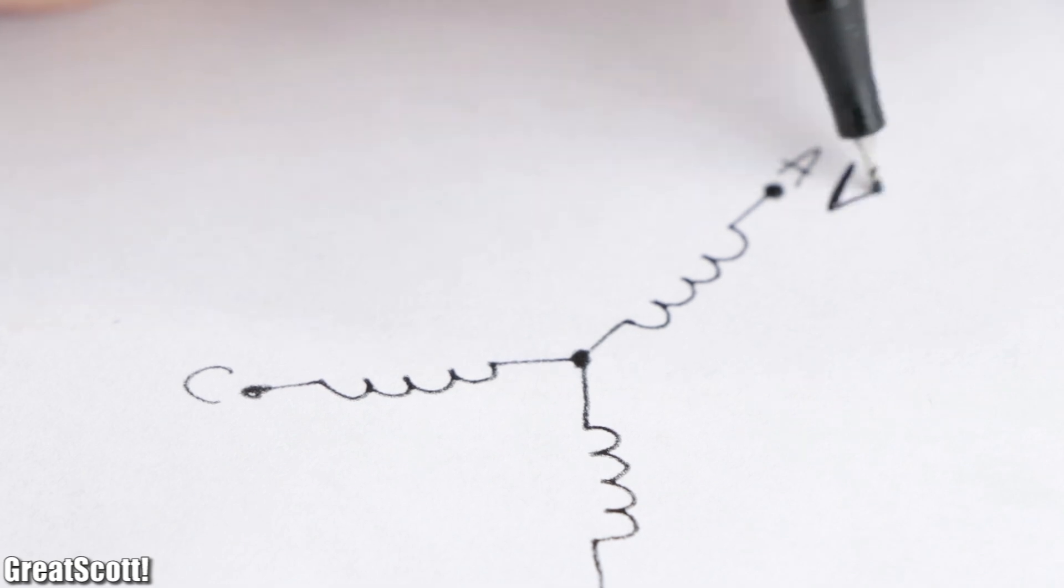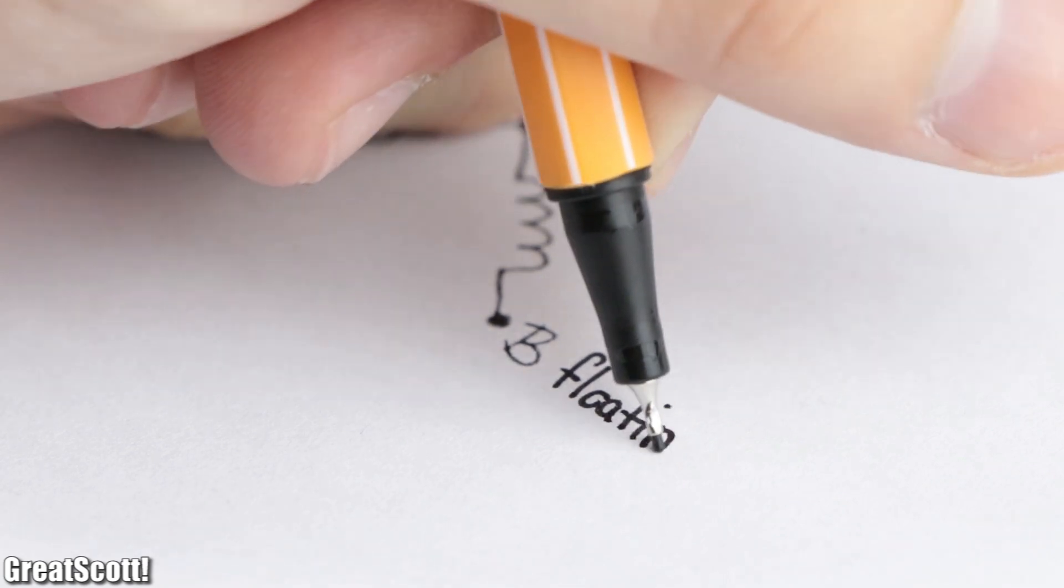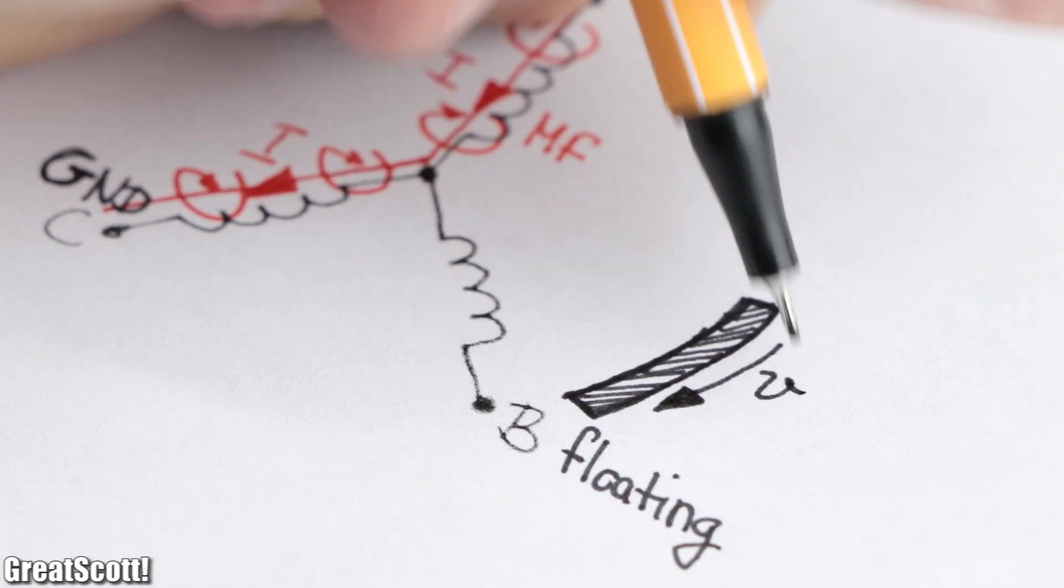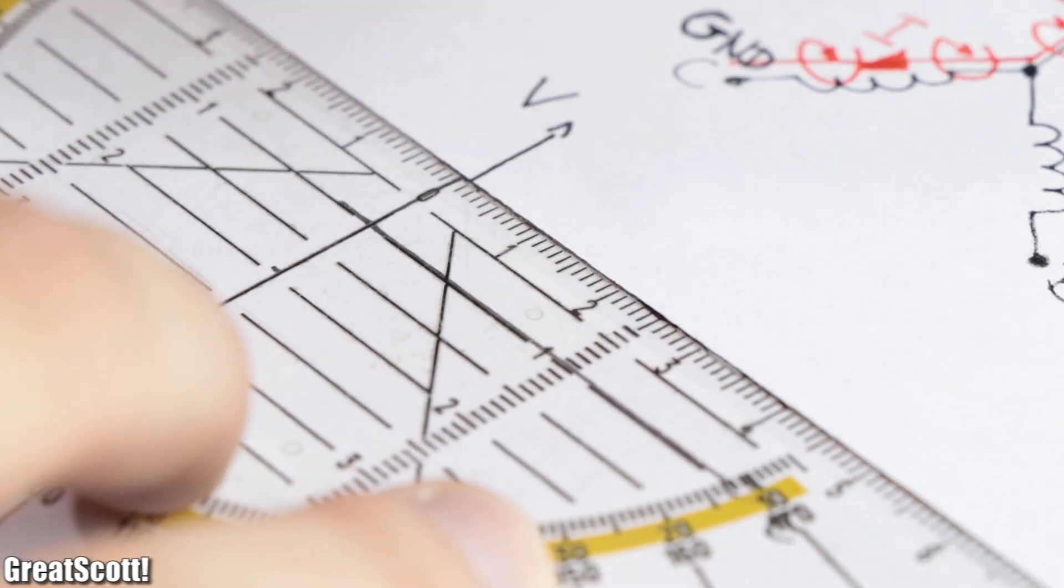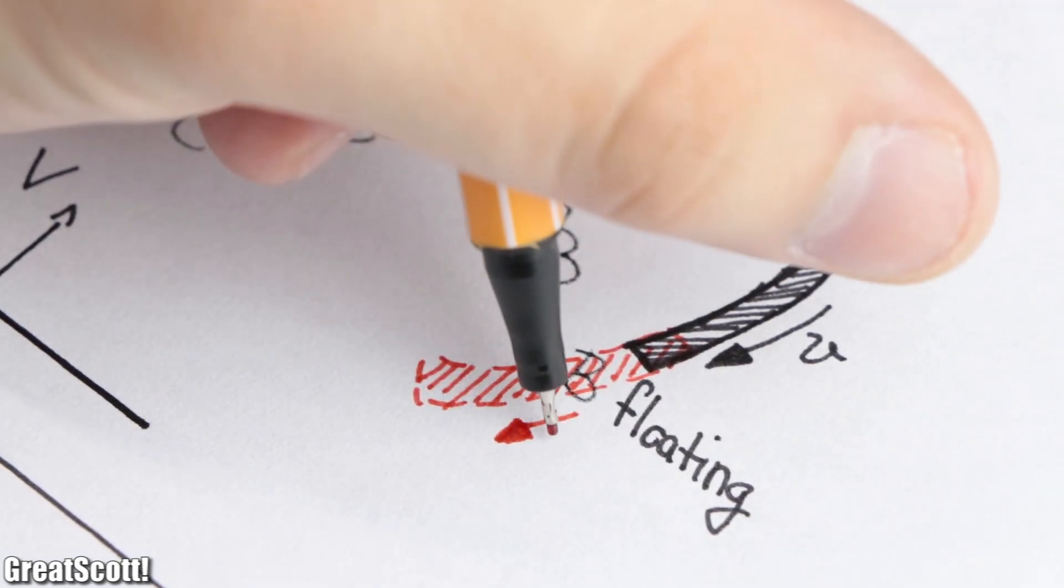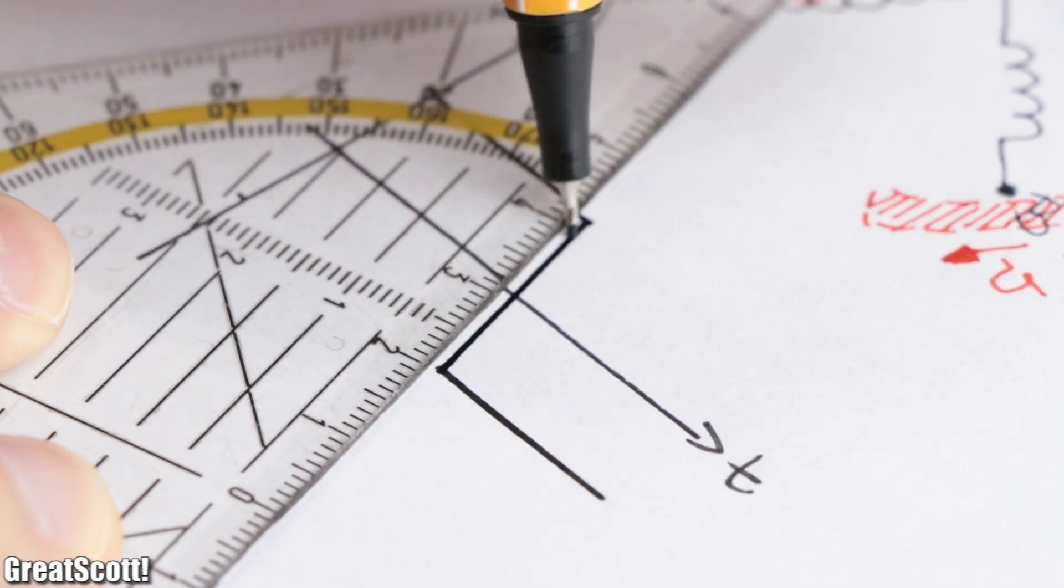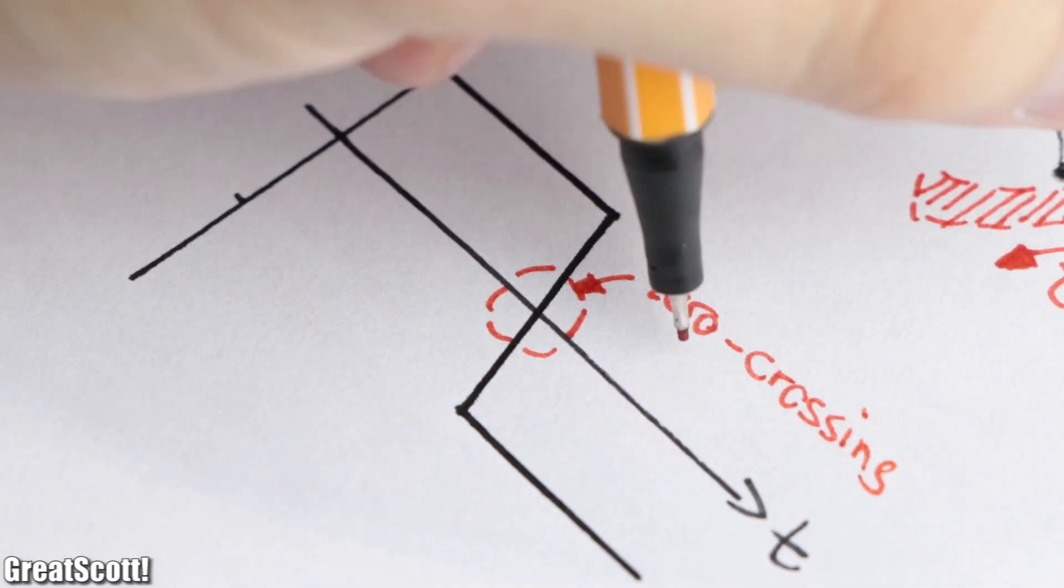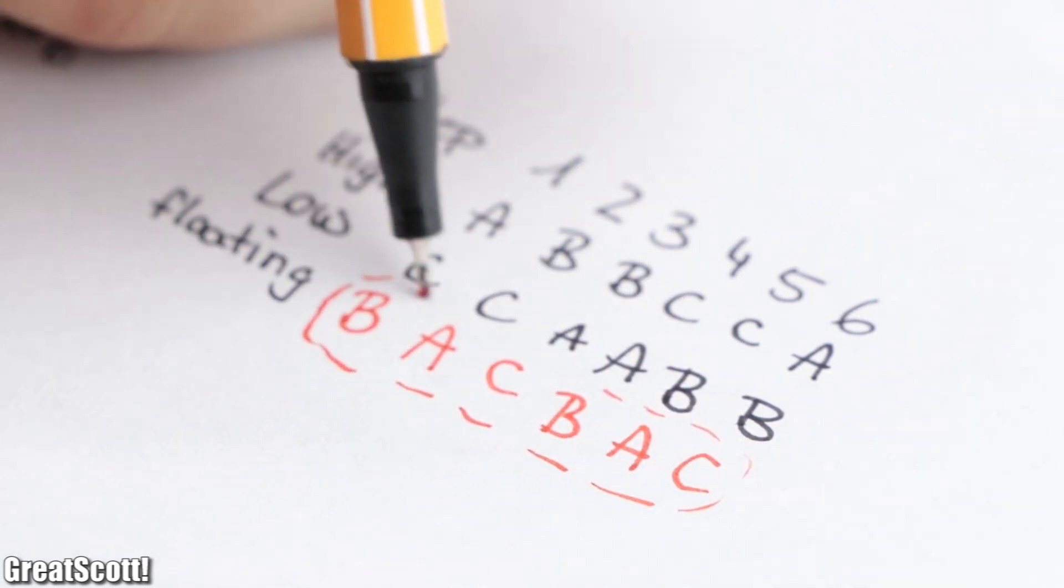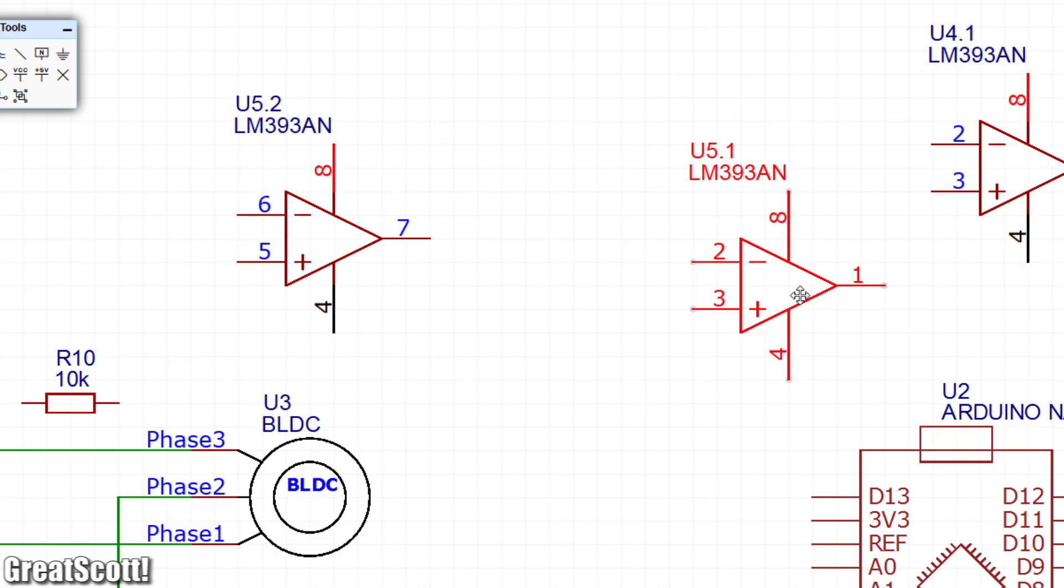As an example, we power the coils A and C according to step 1, which leaves phase B pretty much floating in the air. Now according to the magnetic fields, one magnet will move towards coil B, which thus induces a positive voltage into it. The perfect moment to switch to the next step would be when the magnet is just about to pass phase B, which coincidentally is the moment the magnet starts inducing a negative voltage into the coil. So we can use the zero crossing point, not only from phase B but basically from all the phases that are floating during a step, as an indicator to move to the next step.